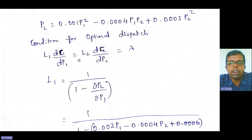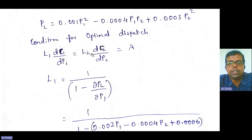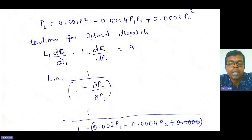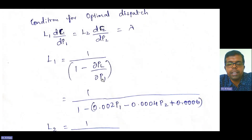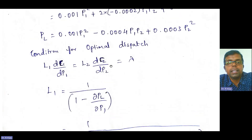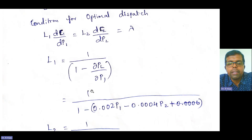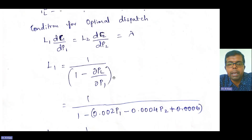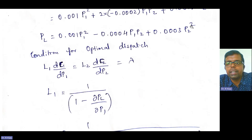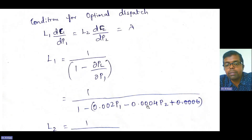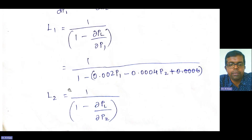The condition for optimal dispatch is: L1 × dC1/dP1 = L2 × dC2/dP2 = lambda. The penalty factor L1 is equal to 1 divided by (1 minus ∂PL/∂P1). Differentiating PL with respect to P1 gives: ∂PL/∂P1 = 0.002 P1 minus 0.0004 P2. After simplifying, we obtain one equation in terms of P1 and P2.